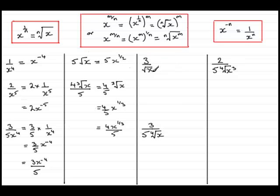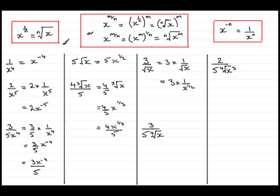Now in this example we have 3 over the square root of x — a root in the denominator. We think of this as 3 multiplied by 1 over the square root of x. The square root of x is x to the half, so we've got 1 over x to the half. We can bring the x to the half up to the top using the negative power rule, giving us 3 times x to the minus 1 half, or 3x to the minus 1 half.